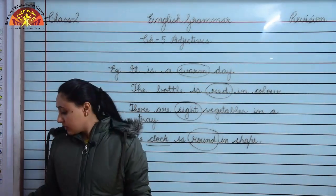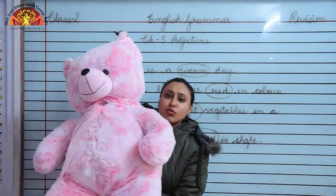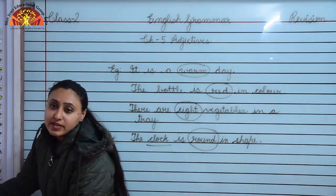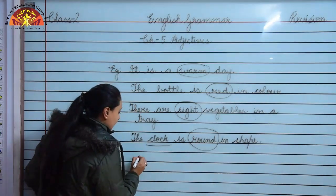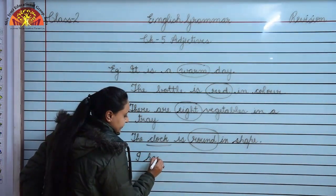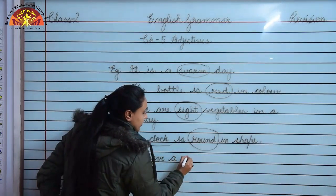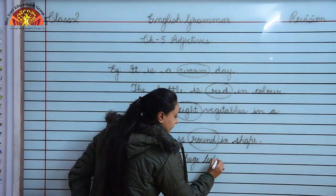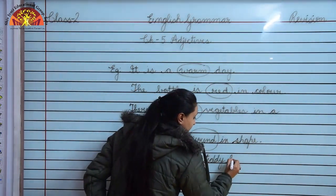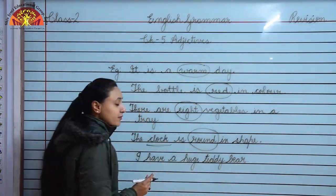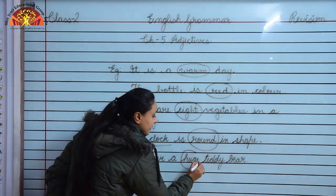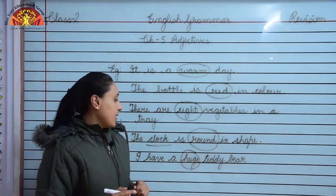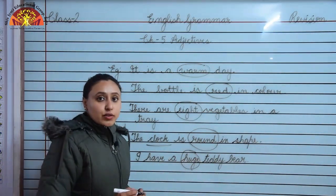Now look here - this is a huge teddy bear, a soft huge teddy bear. The sentence for it is: I have a huge teddy bear. So the adjective for teddy bear is huge. How is the teddy bear? It is a huge teddy bear. Adjective for teddy bear is huge.